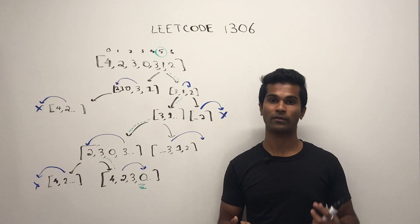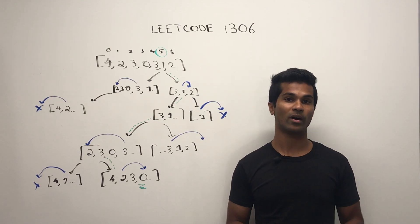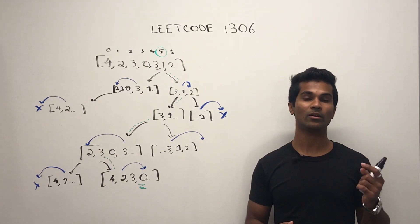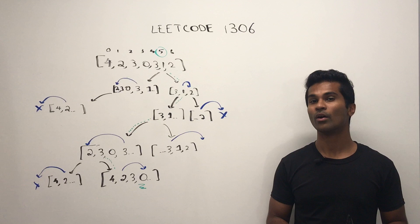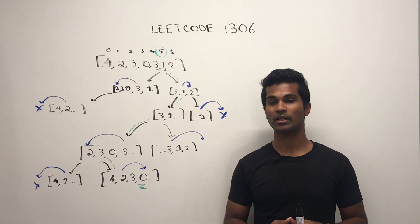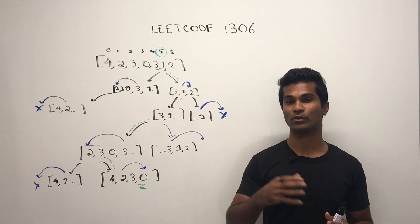Now, we know that we should return true if we find a zero, and we know that we should return false if we go out of bounds, but there might be an issue if we're not careful.